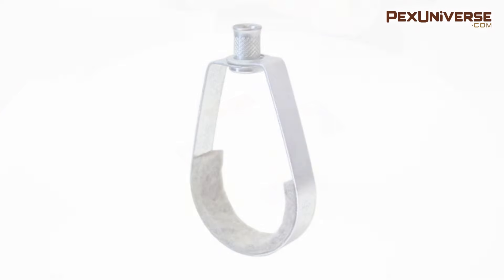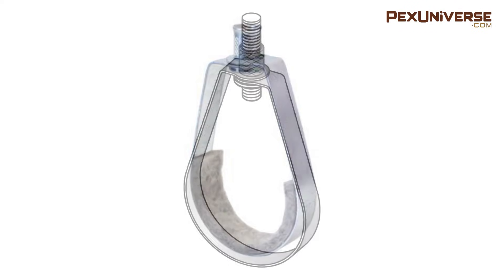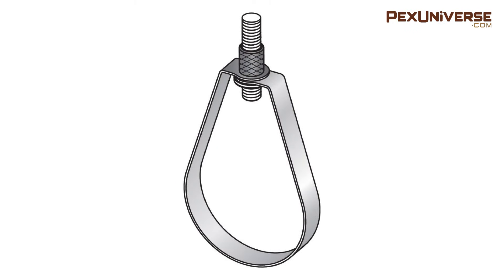The adjustable swivel ring hanger is designed for the suspension of non-insulated stationary pipelines. The knurled insert nut allows vertical adjustment after installation. You can get these from 1/2 inch pipe all the way up to 8 inches which can hold around 300 to a thousand pounds respectively.